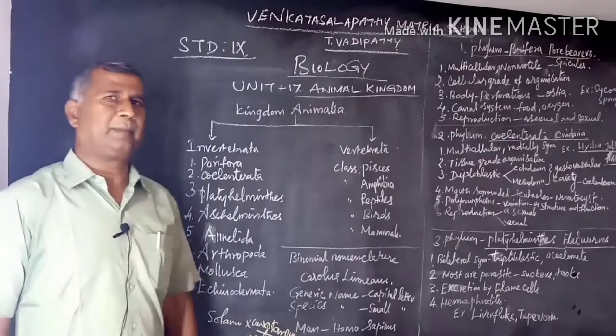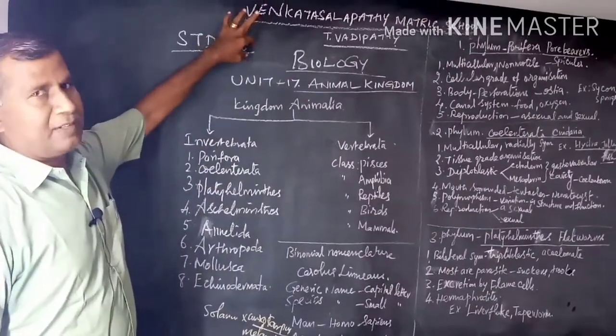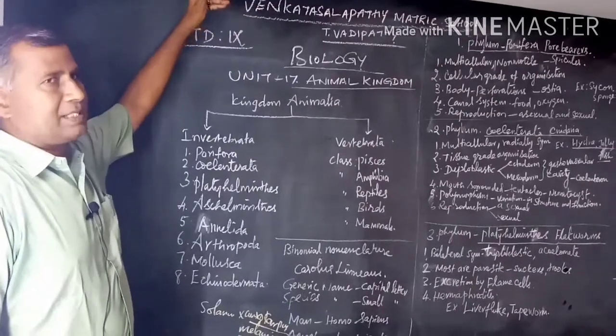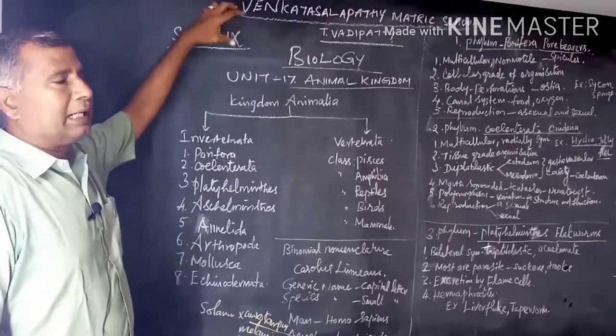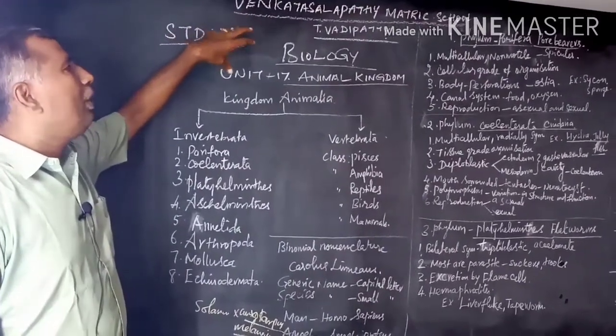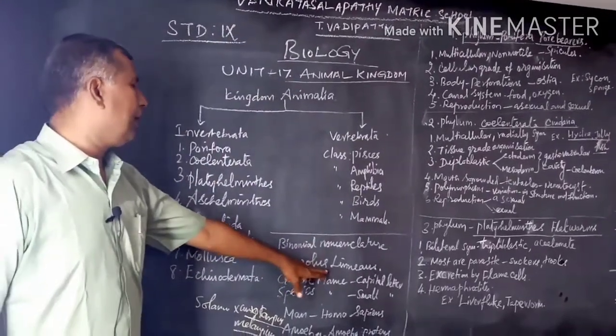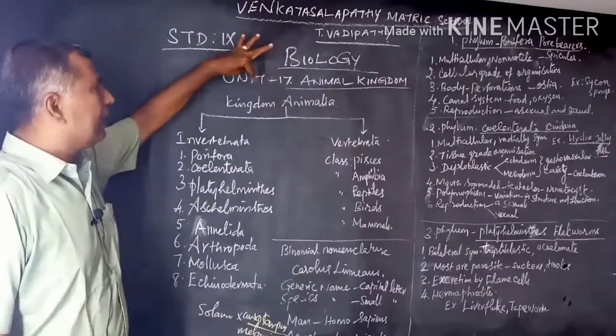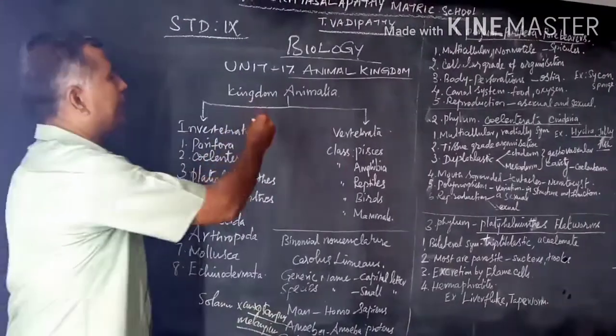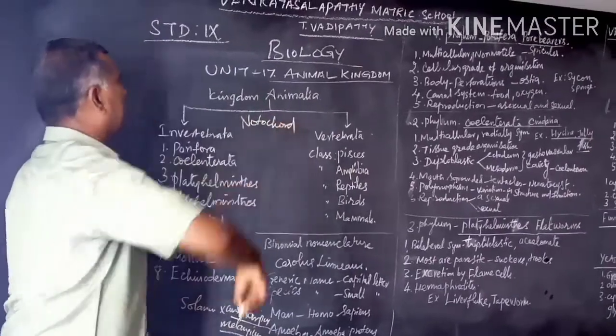Good morning to everybody. Last class we had seen the classification of animals and what criteria we used as our basis for classification, like grade of organization, coelom, symmetry, etc. Now, Carlos Linnaeus was the father of taxonomy and he classified the kingdom Animalia majorly into two based upon the presence of notochord or backbone.